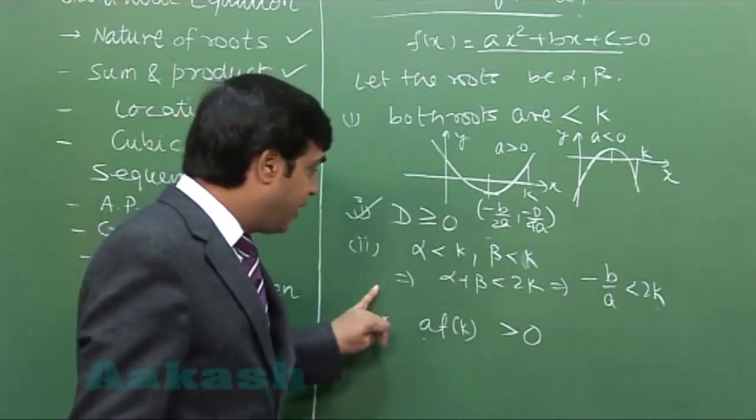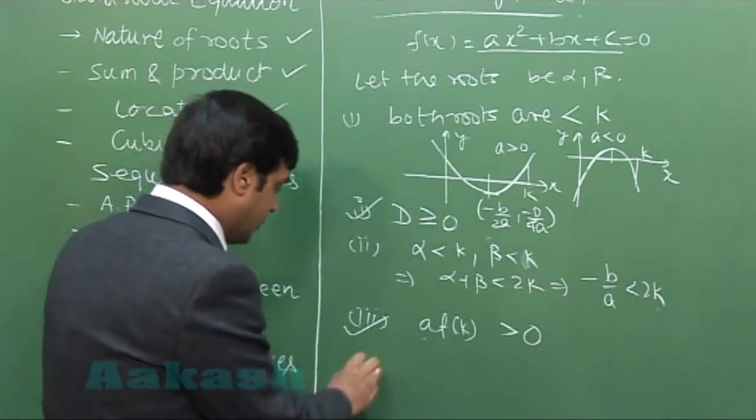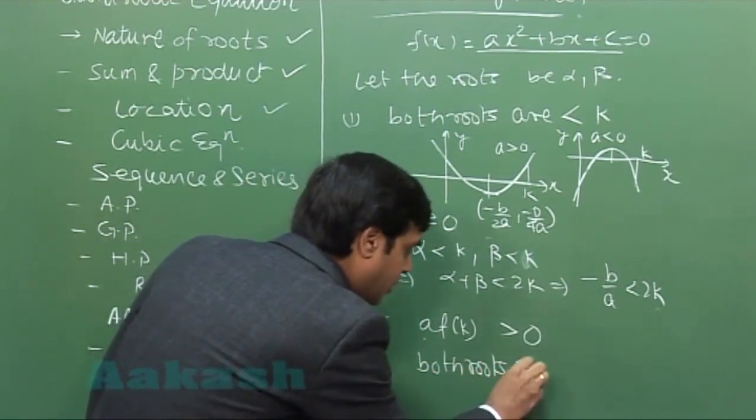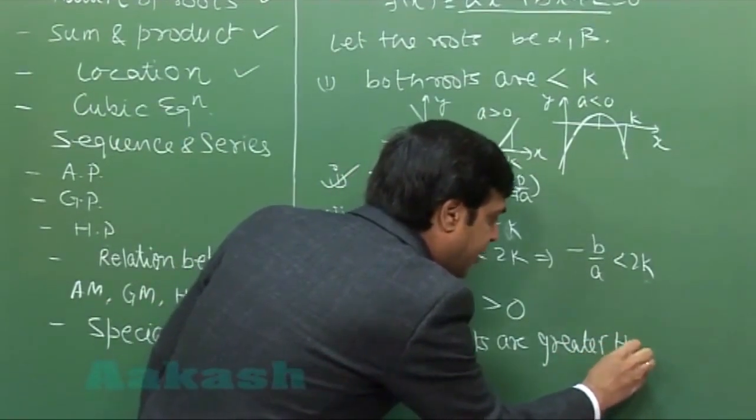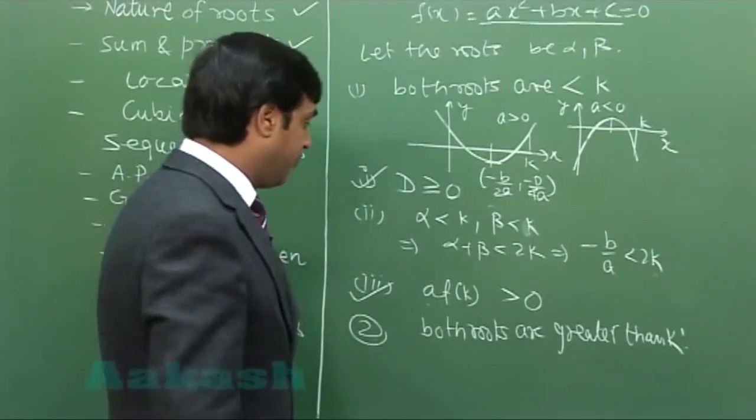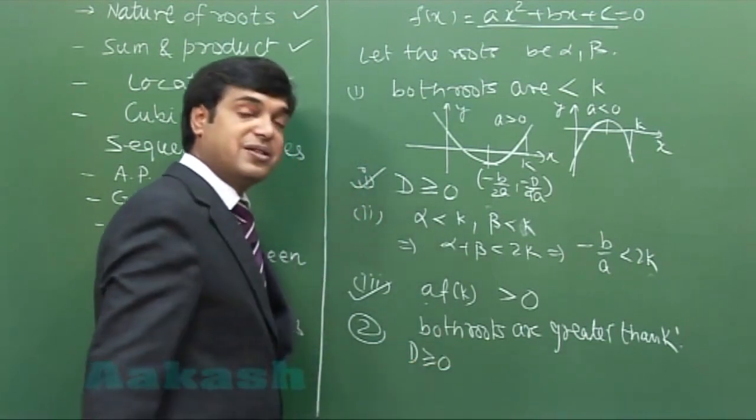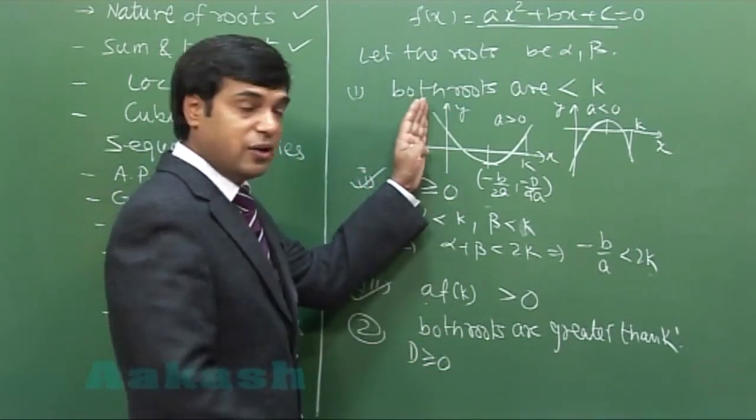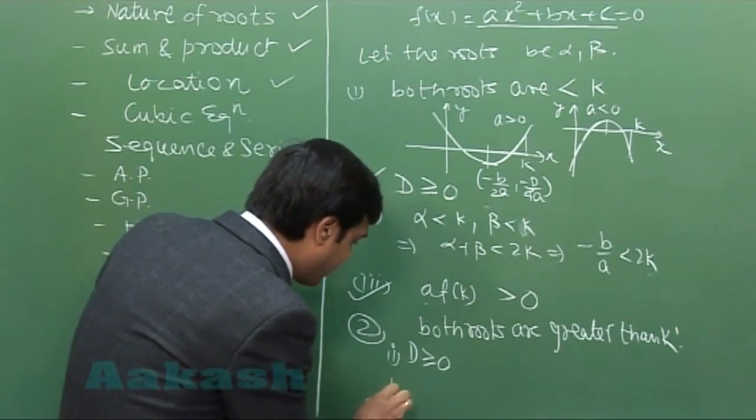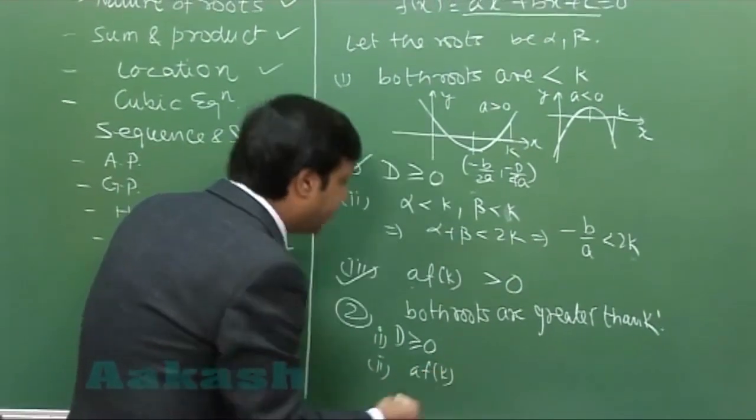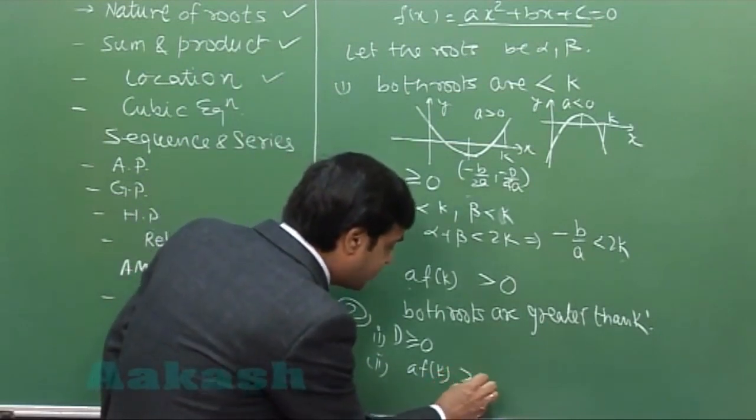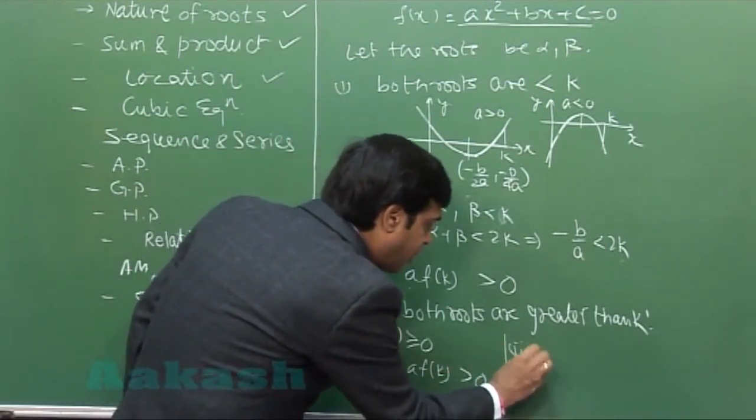For example, consider both roots are greater than k. Both roots greater than k means D will be greater than or equal to 0, because k will be here and both roots are real. Second, when k is here, a·f(k) is again positive.